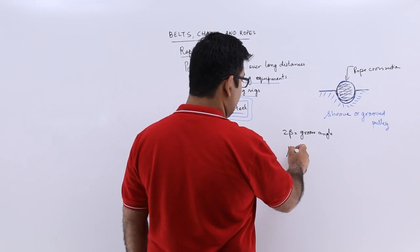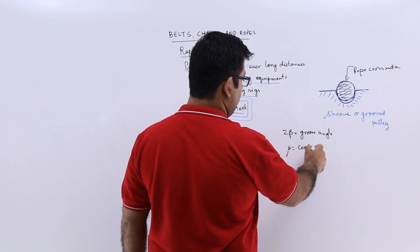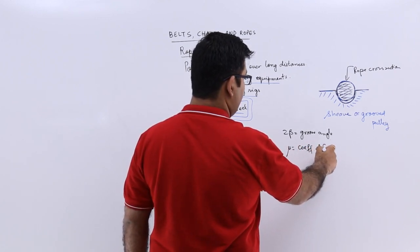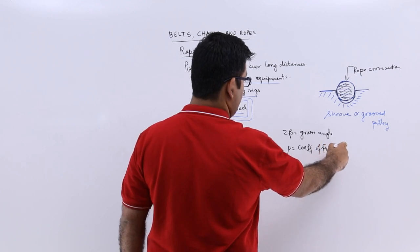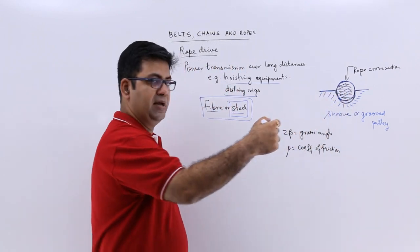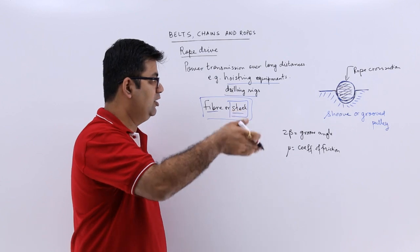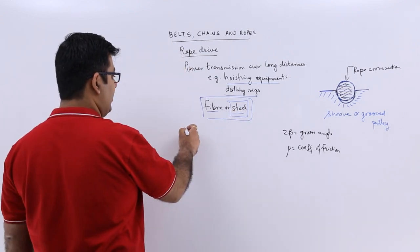And mu is the coefficient of friction, coefficient of friction between the rope and the side of the groove.